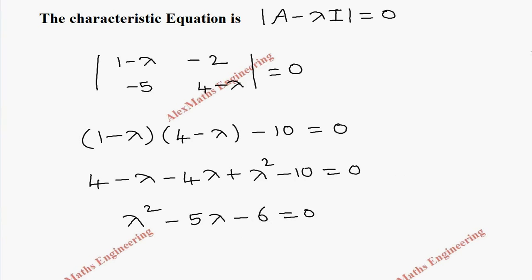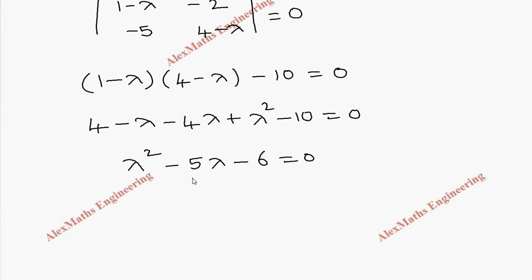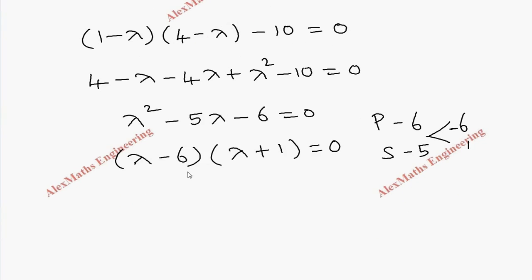Now factorize: product is -6, sum is -5. The two numbers are 6 and 1, and it's -6 because the product gives -6 and the sum gives -5. So the factors are (lambda minus 6)(lambda plus 1) equals 0. Equating each factor to 0 separately, we get lambda equals 6 and lambda equals -1.